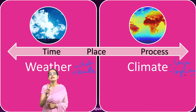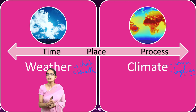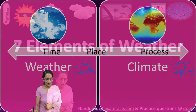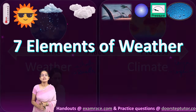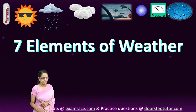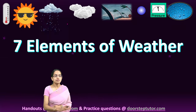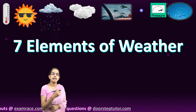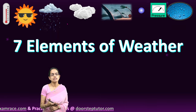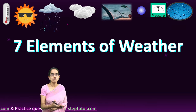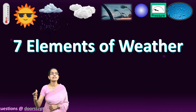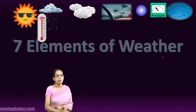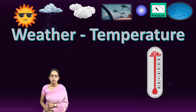That is the basic difference between weather and climate. Now let's talk about the seven elements of weather. The seven elements are: temperature, sunshine, rainfall, cloud, wind, pressure, and humidity. Let's talk about these one by one.